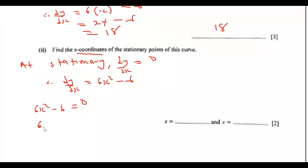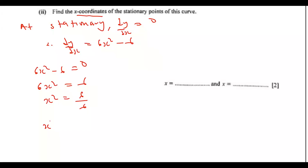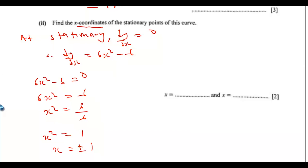So we have 6x squared equals to 6, so x squared equals 6 over 6, which gives x squared equals 1. Then x equals plus or minus 1, taking the square root of 1. So that is the x-coordinates of the stationary points of this curve.